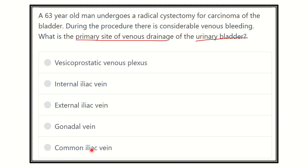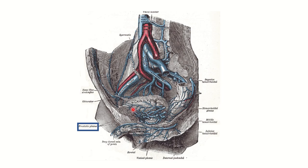Let's look at some pictures. Here we can see the urinary bladder, and here we can see other structures such as the external iliac vein, common iliac vein, and internal iliac vein. These iliac veins are relatively far away from the bladder, so it is not possible for the bladder to drain blood directly into the internal iliac vein or external iliac vein.